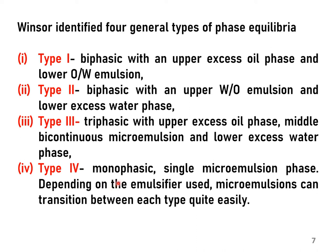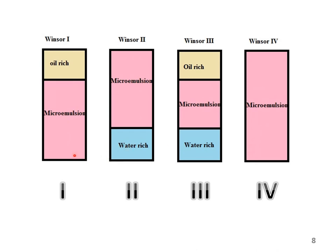These four types have been shown on the next slide in a diagrammatic representation. Winsor has classified microemulsions into four types: Type 1 is biphasic where there is an upper oil-rich phase and a lower microemulsion phase. Type 2 has a lower aqueous-rich phase and an upper microemulsion phase. Type 3 is triphasic with microemulsion at the center, oil-rich phase at the top, and the aqueous-rich phase at the bottom. Type 4 is the ideal microemulsion — a monophasic system consisting of tiny globules of 1 to 100 nanometers of the dispersed phase in the dispersion phase.